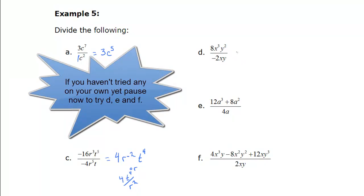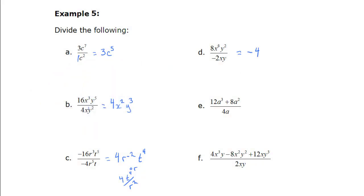d, 8 divided by negative 2 is negative 4. x to the 3 minus 1 is x to the 2. y, 2 minus y to the 1. So 2 minus 1 is y. Or y to the power of 1.